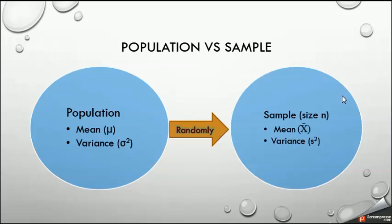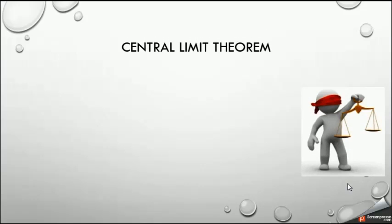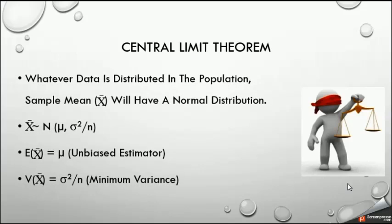After that, we take a random sample from the population with sample size n — for example, 10, 12, 15, or 20 elements. The sample also has a mean and a variance. The sample mean is called x-bar (x̄), the sample variance is called s squared (s²), and the sample standard deviation is called s.